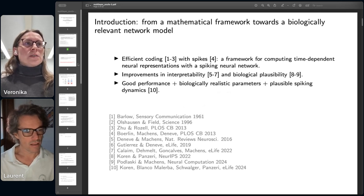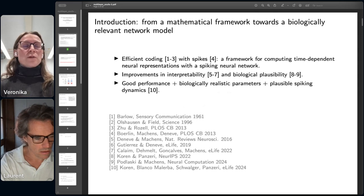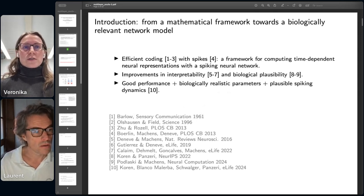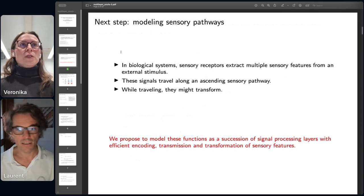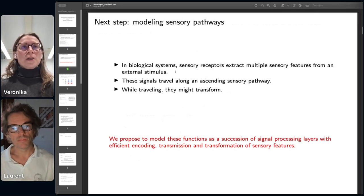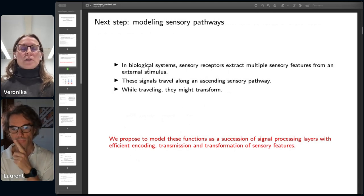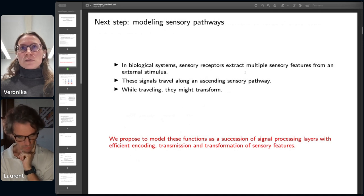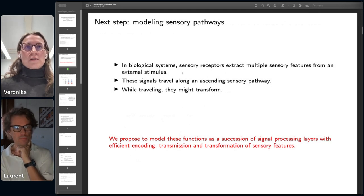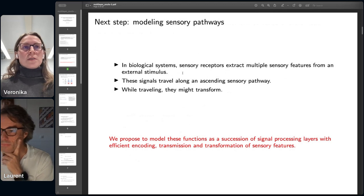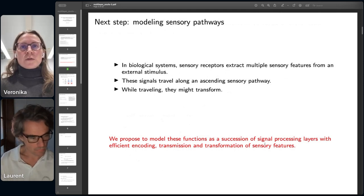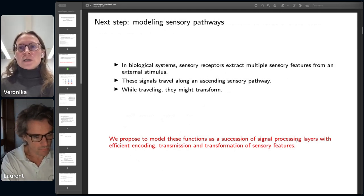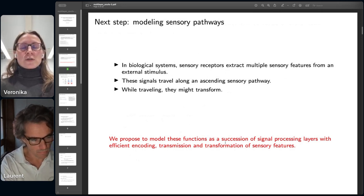So far, the work in efficient spiking networks has focused on modeling a single layer of neurons—basically a recurrently connected network. A very natural next step is to extend this and model sensory pathways. In biological systems, different types of sensory neurons extract different sensory features from an external stimulus, then they encode and transmit the signals along a sensory pathway. During this process, these signals might also transform. We propose to model these functions with a succession of signal processing layers, each of which will encode, transmit, and potentially transform these sensory features.